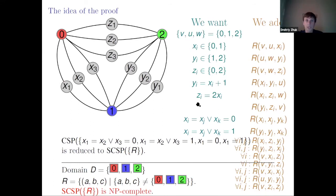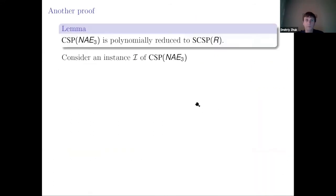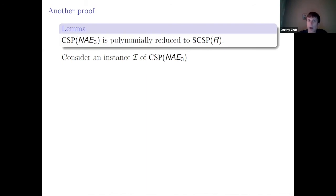If you don't like that proof, I have another one. Let's prove that CSP over 'not-equal' on the two-element domain can be polynomially reduced to surjective CSP over R.